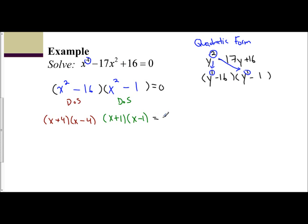And to solve, remember you set each one equal to 0. So x plus 4 equals 0, x equals negative 4, x minus 4 equals 0, x equals positive 4. So I get x equals plus or minus 4.